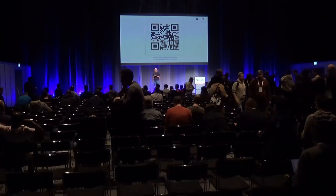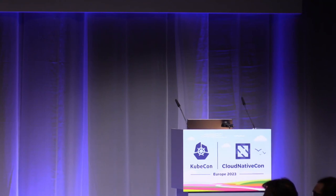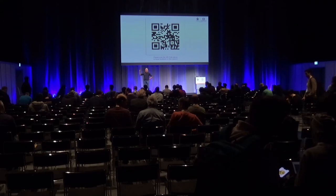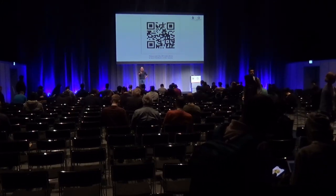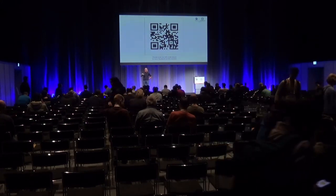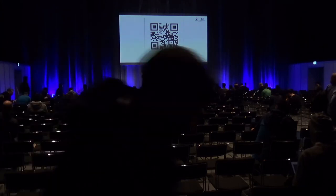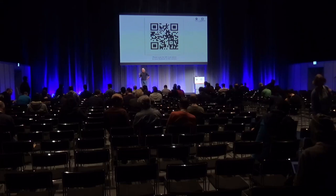Question from the audience: With Kpt, do you run some kind of Kpt agent in every cluster? Answer: So in the management cluster, yes. Porch is a component of configuration as data — it's the backend that runs inside the management cluster and has a Git backend. The fan-out and specialization all interact with the Porch API, which is a Kubernetes API, to make all the changes to the backend Git and get version control. So the component of Kpt that does this is called Porch.